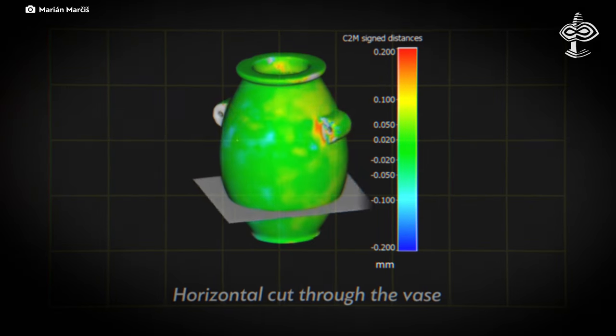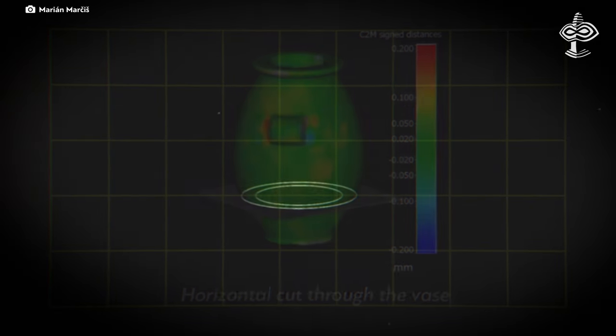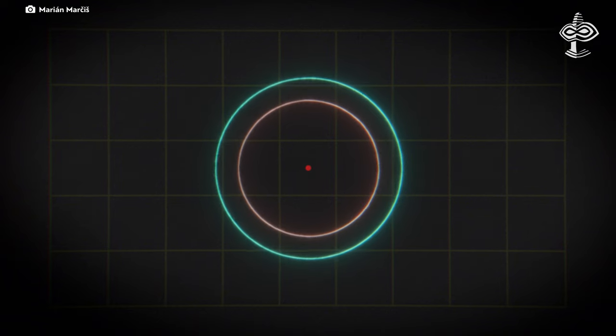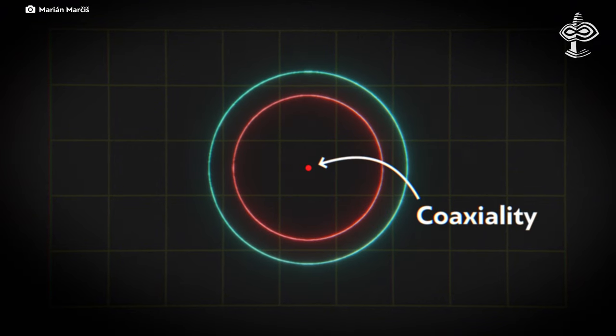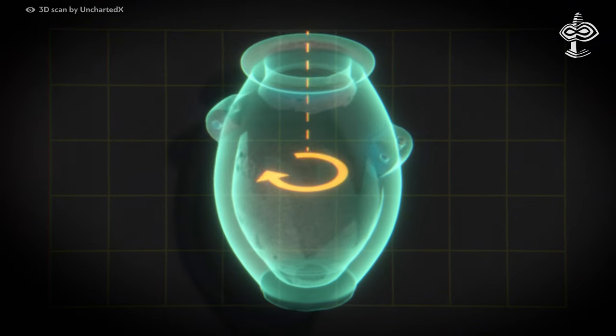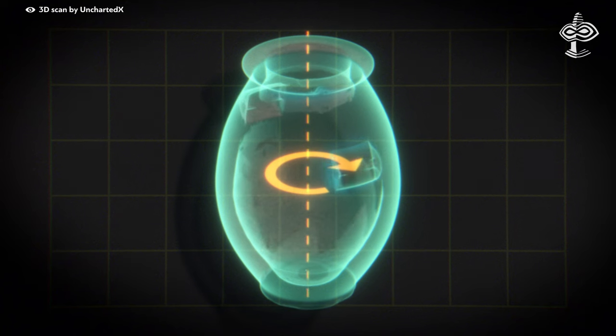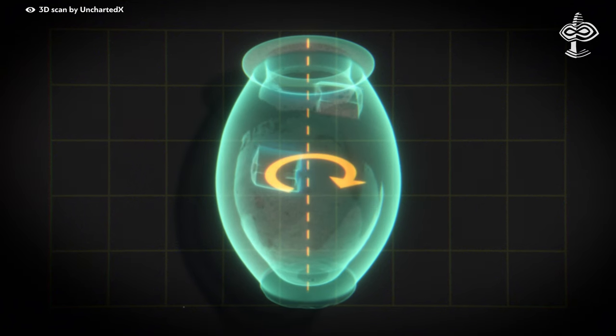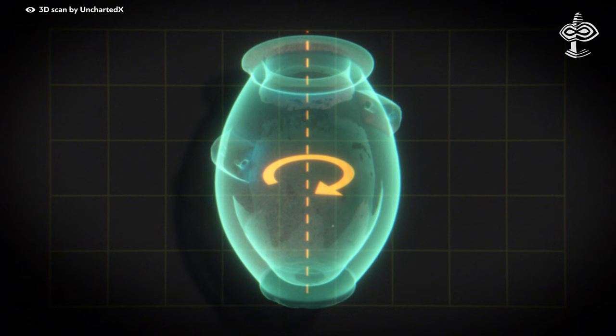When a vase is halved, the alignment of its internal and external surfaces along the same axis is known as coaxiality. The findings suggest that the vase was held very steadily in place while it was possibly being turned and shaped with an unidentified tool.